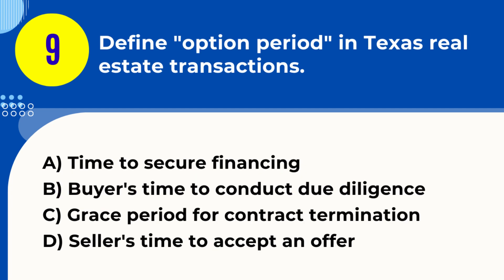Question 9. Define option period in Texas real estate transactions. A. Time to secure financing. B. Buyer's time to conduct due diligence. C. Grace period for contract termination. D. Seller's time to accept an offer. Answer: B. Buyer's time to conduct due diligence. Explanation: The option period in Texas allows buyers a specified time to conduct due diligence, such as inspections, before finalizing the purchase.